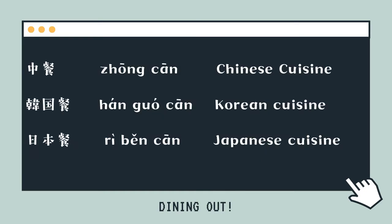中餐 — Chinese cuisine. 韓國餐 — Korean cuisine. 日本餐 — Japanese cuisine.